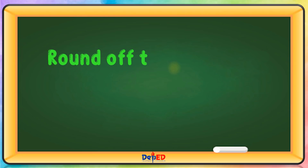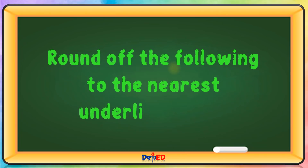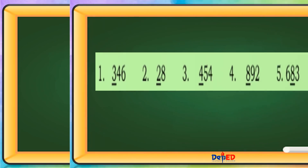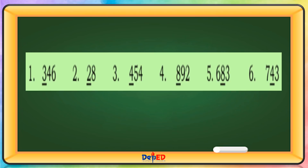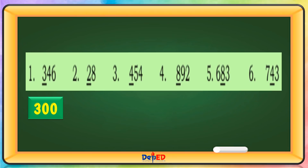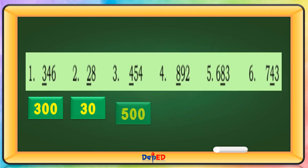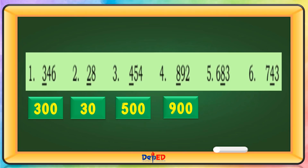Round off the following to the nearest underlined digit. 346 is 300. 28 is 30. 454 is 500. 892 is 900. 683 is 680.